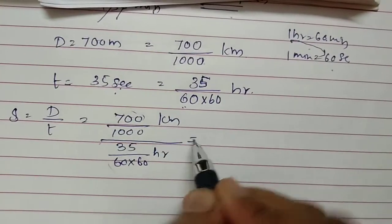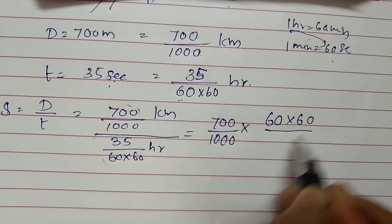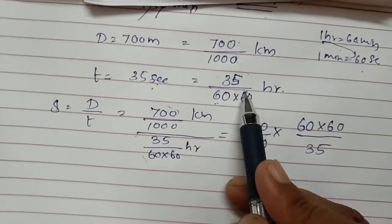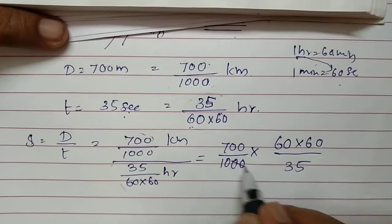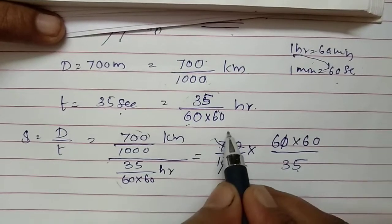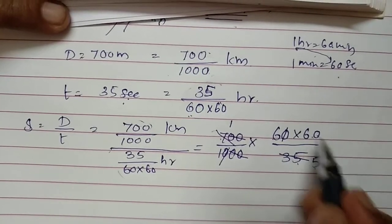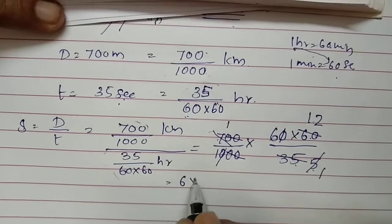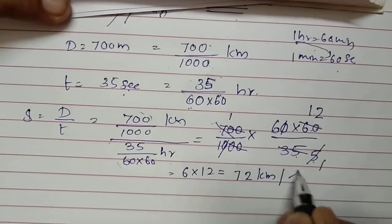Dividing a fraction by another fraction means multiply by the reciprocal: 700/1000 × 3600/35. Cancelling zeros: divide by 100 leaving one zero, then divide 7 and 35 by 7 giving 1 and 5. Then 6 × 60 divided by 5 — divide 60 by 5 to get 12 — so 6 × 12 equals 72. The answer is 72 kilometers per hour.